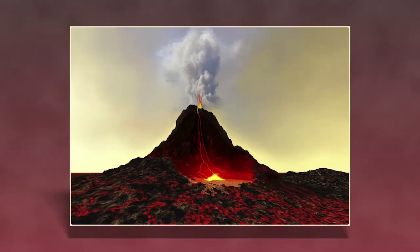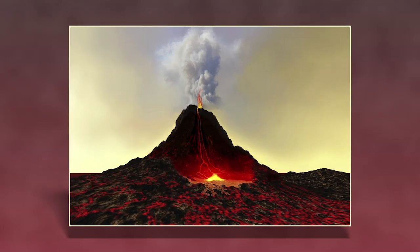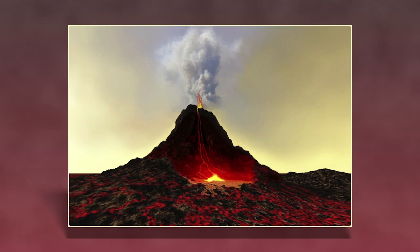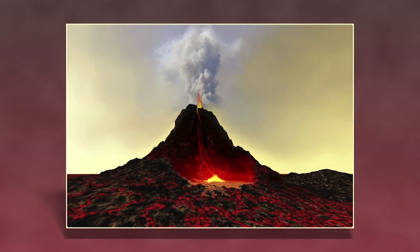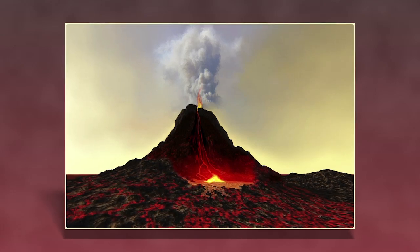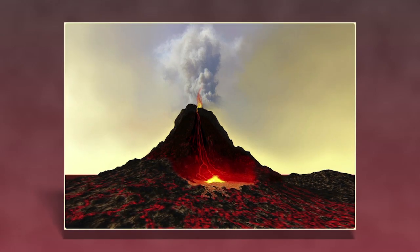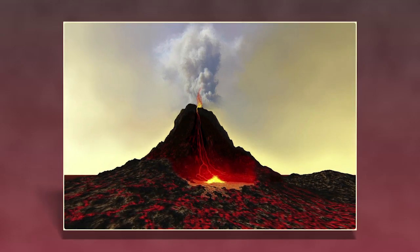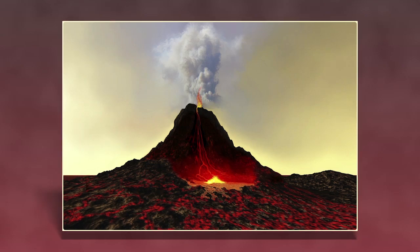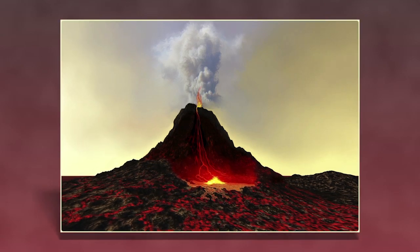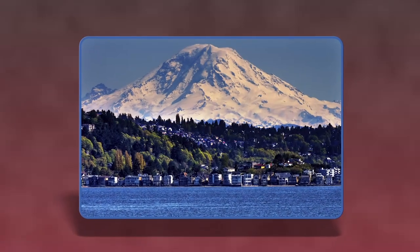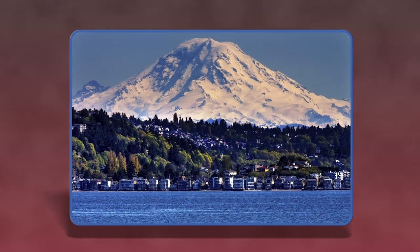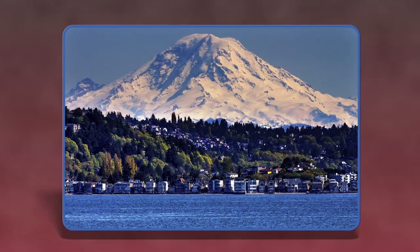Volcanic mountains form in different shapes and sizes. Composite volcanoes are one type of volcano. They have the most violent eruptions and can create huge mountains. Mount Rainier in the state of Washington is one example.